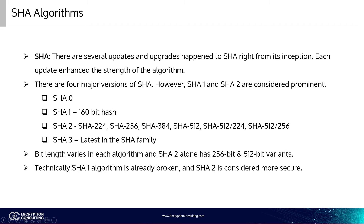When learning about different SHA forms, several different types of SHA are referenced. Examples of SHA names used are SHA-1, SHA-2, SHA-256, SHA-224, SHA-512, and SHA-384. But in actuality, there are only two types: SHA-1 and SHA-2. The other larger numbers, like SHA-256, are just versions of SHA-2 that denote the bit lengths of the SHA-2 encryption.